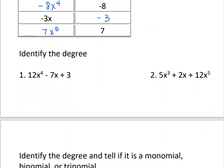We want to identify the degrees in these polynomials. The degree is whatever the biggest exponent is. For number 1, the degree is 4. For number 2, it's not the first term — it's whatever the biggest exponent is — so the degree would be 5.